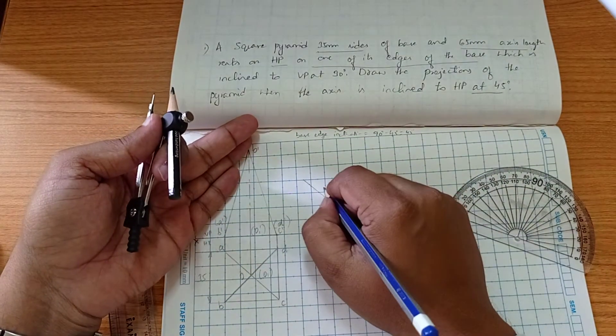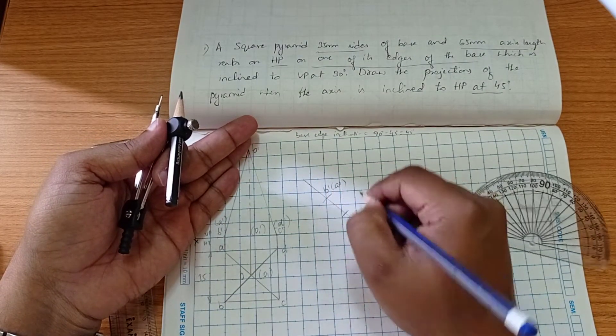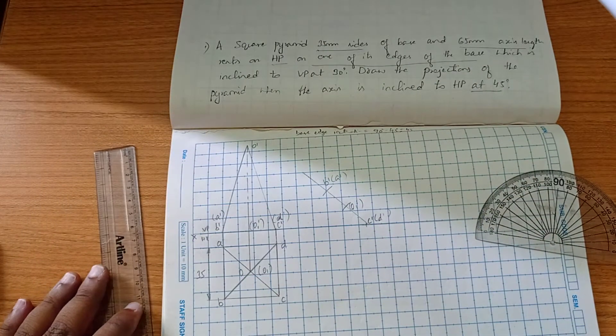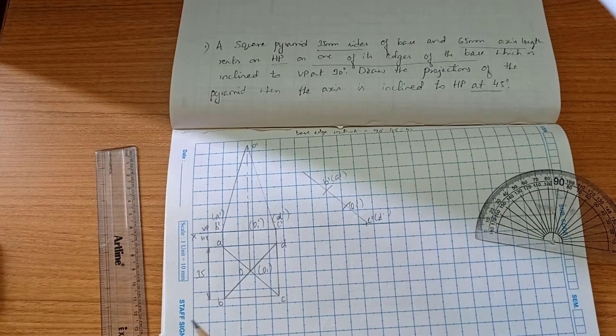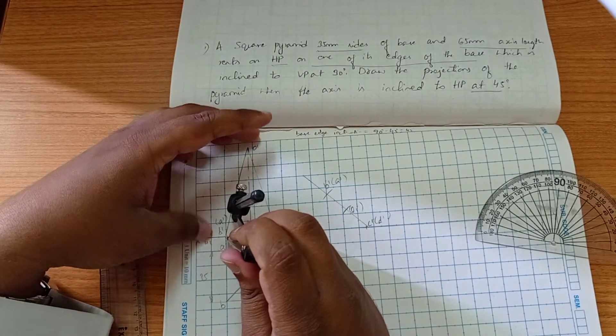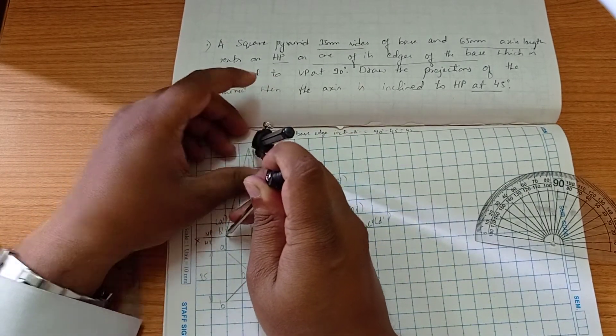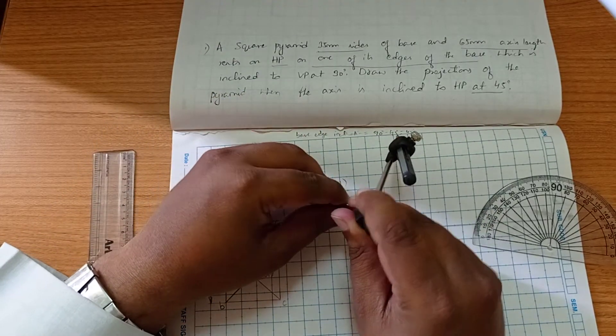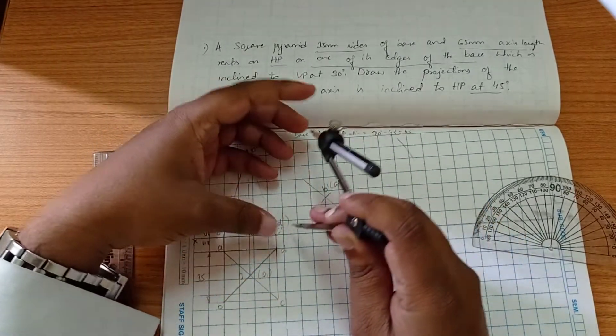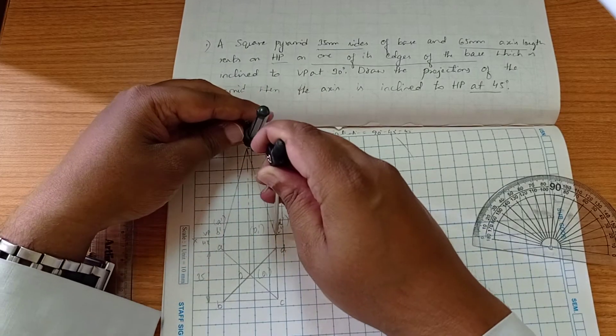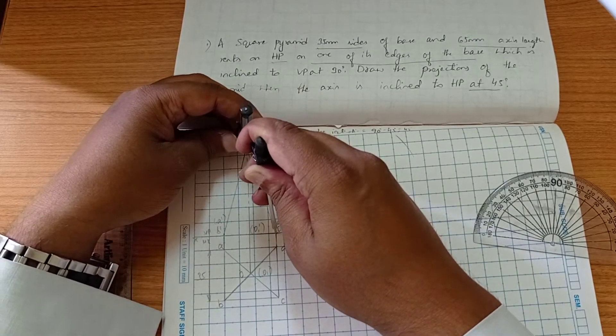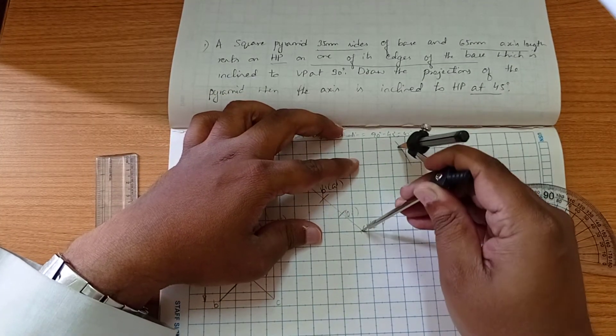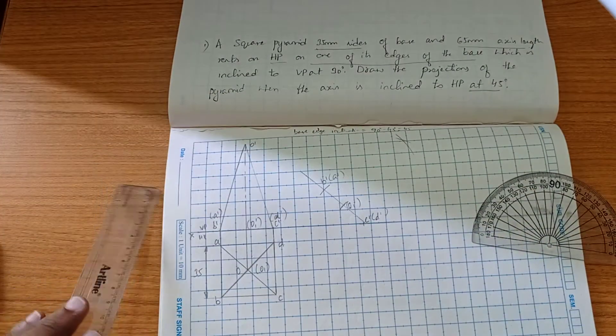I'm marking here B dash and O dash, this is 1 dash. Now using the compass, measure and draw the second arc from C dash, then you can join it.